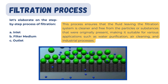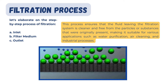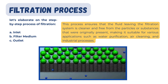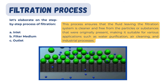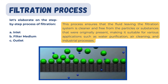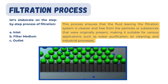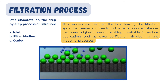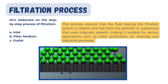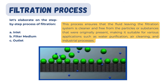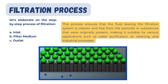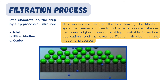Now for the most important discussion — the process of filtration. The filtration process starts with the inlet, where contaminated fluid with particles or impurities enters the filtration system through a designated entry point. It then comes in contact with the filter medium, which acts as the heart of the filtration process, capturing and retaining undesired particles while allowing clean fluid to pass through. At the end comes the outlet, where the filtered clean fluid exits the system, leaving behind the trapped particles and impurities.